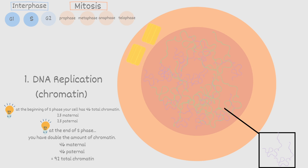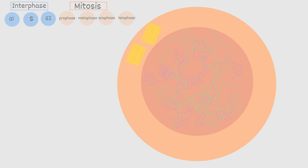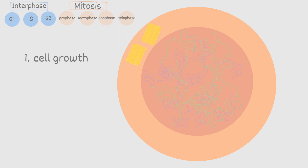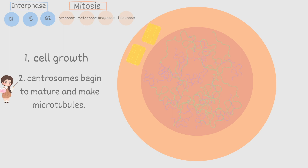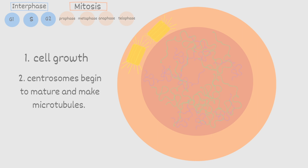After completing DNA replication, the cell enters G2 phase, or gap 2. First, the cell continues to grow — the cytoplasm, the mitochondria, the centrosomes all continue to grow so there is sufficient and equal amounts for both daughter cells. Secondly, the centrosomes begin to mature and make microtubules. Also the centrioles begin to elongate — the centrioles are the long tubes that make up the centrosome, so essentially a centrosome is made of centrioles.